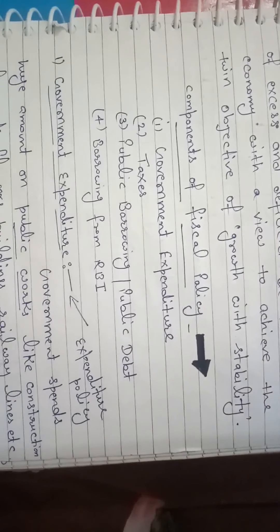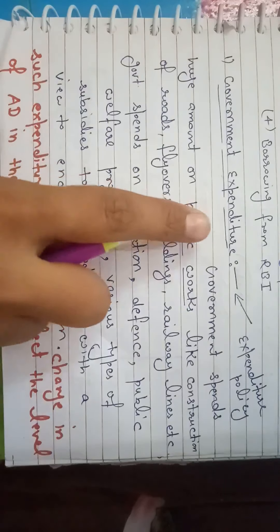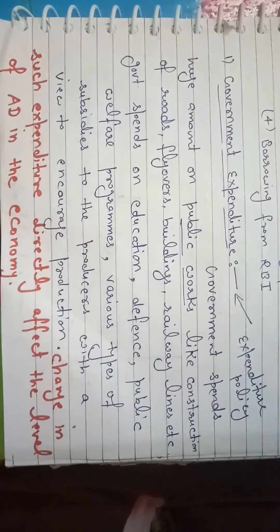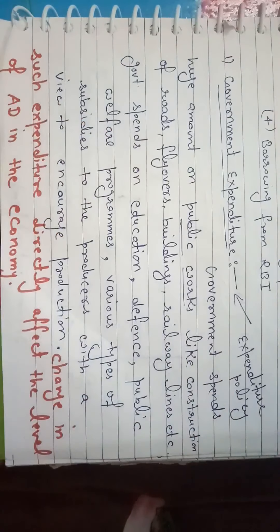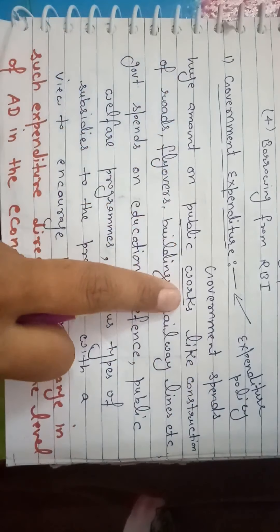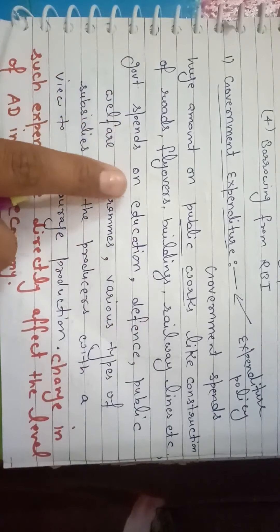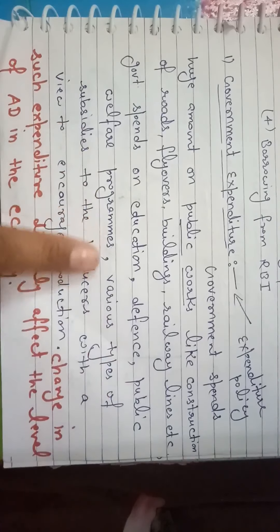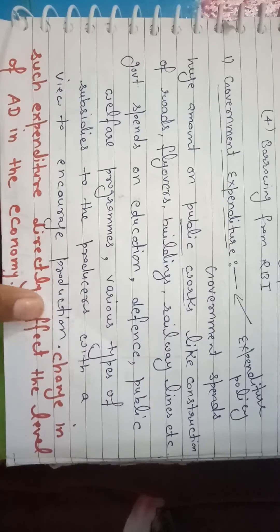Our first measure is government expenditure. Government expenditure is an important component of aggregate demand. This measure is a part of fiscal policy and is termed as the expenditure policy of the government. The government spends huge amounts on public works like construction of roads, flyovers, buildings, railway lines, education, defense, public welfare programs, and various types of subsidies to producers to encourage production.